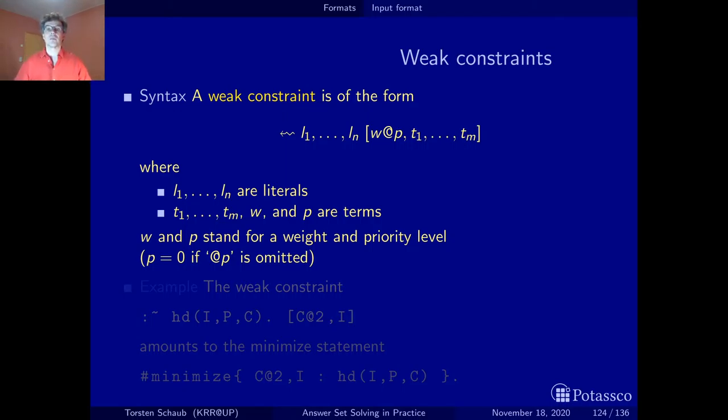Weak constraints are like integrity constraints, just that they do not, once they apply, once their condition is satisfied—condition means L1 to Ln—rule out the solution candidate. Instead, you pay a penalty, which is expressed by this weight here.